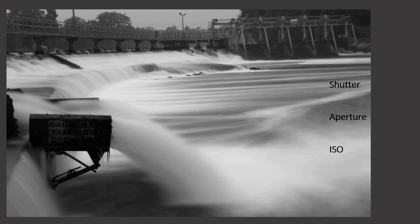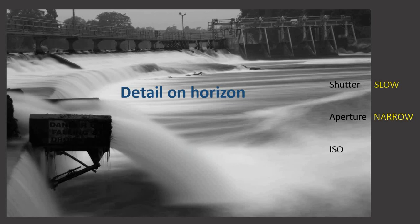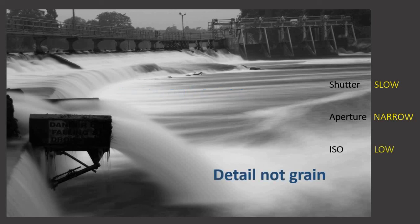On this one the most obvious would be the smooth looking water — this is the equivalent of blurry streaks of light at night, like traffic going by leaving a streak of tail lights. So the water has been achieved with a slow shutter speed, blurred motion. We can tell it's not just a blurry photo because everything else is sharp. The detail on the horizon is sharp, which suggests a narrow aperture — small aperture, less light getting in, keeps the background sharp. And it's generally detailed, not grainy, so low ISO.